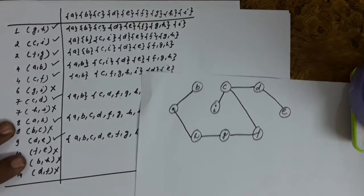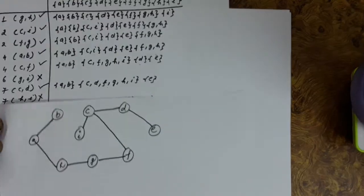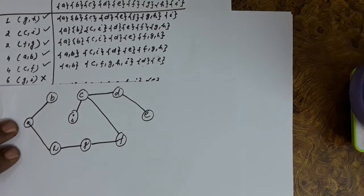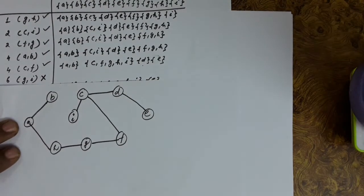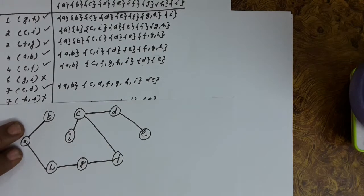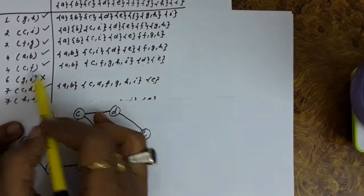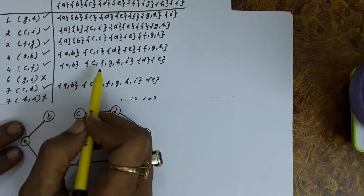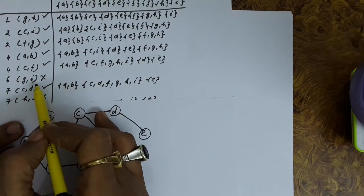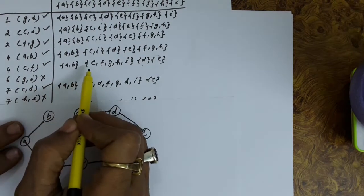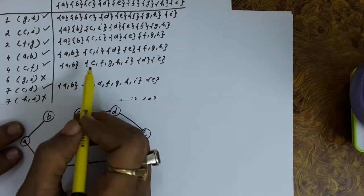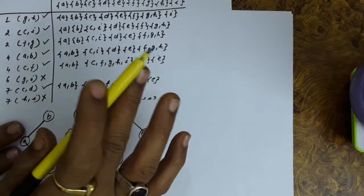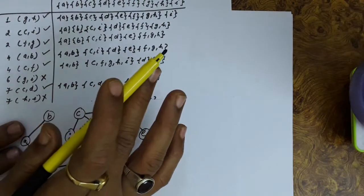Now let us understand why edges like GI and HI were rejected. If G and I are in the same set, it means including that edge would form a cycle. So if any edge would create a cycle, we reject it and do not select it for the minimal spanning tree.